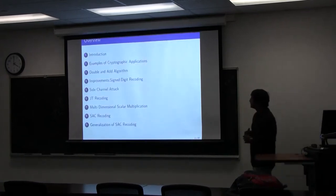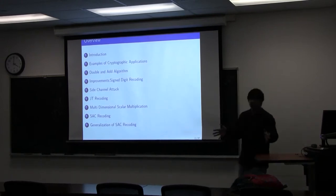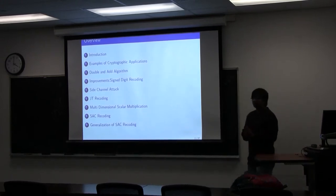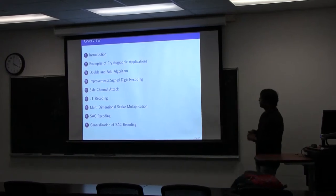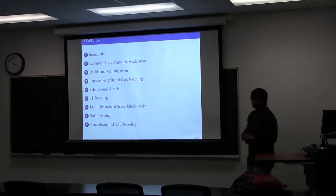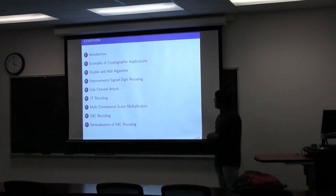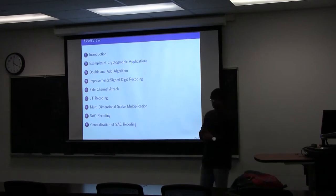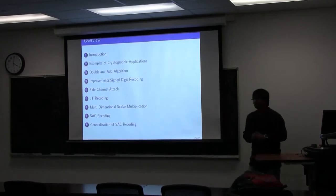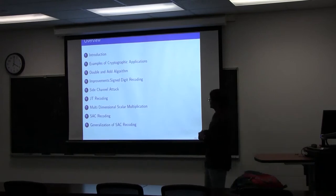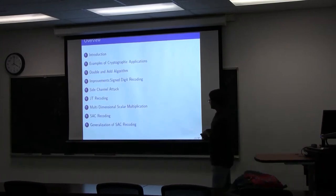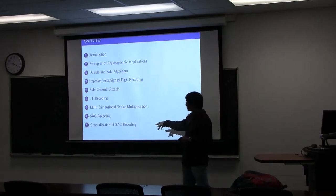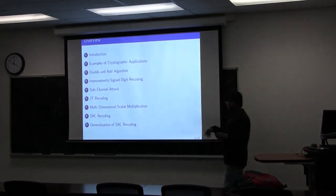So first, this is an overview: some introduction on what is scalar multiplication, what are elliptic curves — very basic stuff. Then some examples, like cryptographic applications of scalar multiplication, and the most basic algorithm to calculate scalar multiplication. Then I will talk about improvements, and by the end I will talk about what I work on recently, which is a generalization of SAC v-coli.